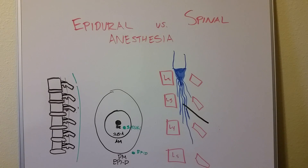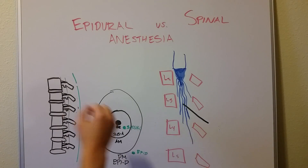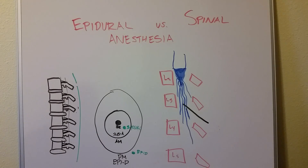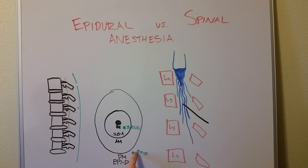Now you can see, just because of where we're actually putting those needles or injections, why a spinal or intrathecal has a much faster onset and a much stronger block. We are putting that drug in the subarachnoid space right next to the spinal cord — essentially dousing the spinal cord with a drug. Whereas with an epidural, in the epidural space outside both the dural and arachnoid membranes, the drug has to diffuse through those two layers to hit the spinal cord. That's why it's not as quick in onset and not as strong a block.